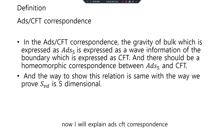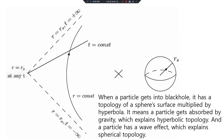The definition: ADCFT Correspondence Theory. In ADCFT Correspondence Theory, the gravity of the bulk, which is expressed as ADS5, is expressed as the weight information of the boundary, which is expressed as CFT. There should be a Hummel-Mersey correspondence between ADS5 and CFT. The way to show this relation is the same as the way we prove S3D's five-dimension. When a particle gets into a black hole, it has the topology of a sphere surface multiplied by a hyperbola. This means a particle gets absorbed by gravity, which explains hyperbolic topology, and a particle has a wave effect, which explains spherical topology.